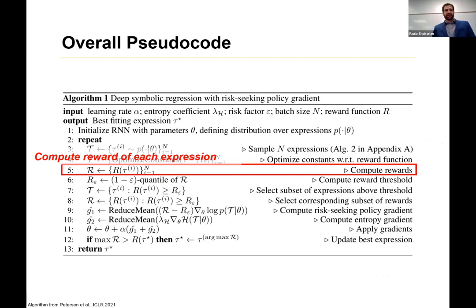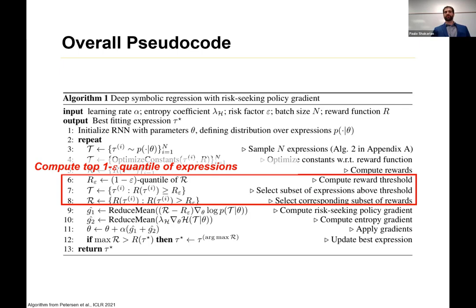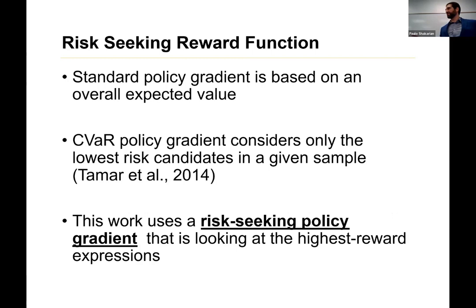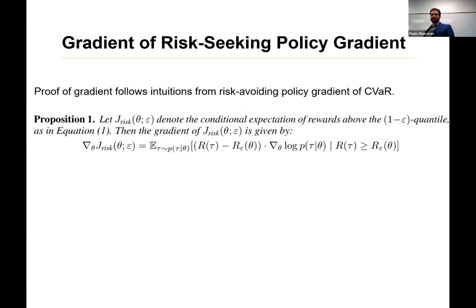Okay, so going on to the next step is computing the reward of each expression. So, again, here is this normalized root mean squared error. But, again, since you're actually using the function in question, it's not differentiable. So this is why we're using this framework. So then what we're going to do is we're going to find the top 1 minus epsilon quantile of expressions. And so the idea is there was this idea from reinforcement learning called risk-avoiding policy. Here they're looking at the opposite. They're looking at a risk-seeking policy because you're trying to maximize the fit to the data. So you're trying to find the highest reward value.